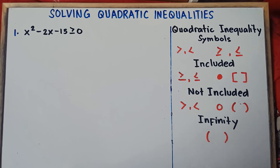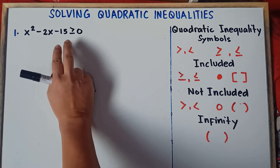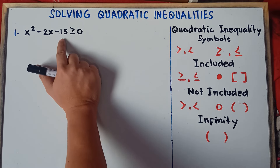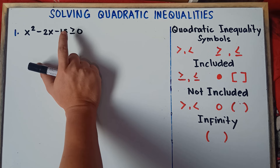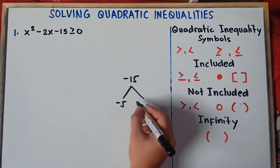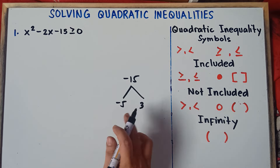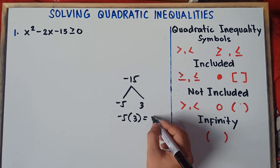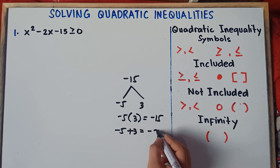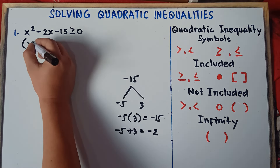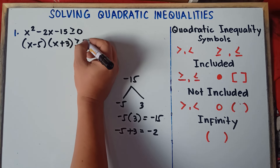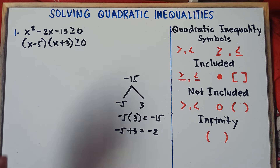Let's start answering. The first step is to factor this quadratic inequality. You find two numbers that when multiplied give negative 15, and when combined give negative 2. Those numbers are negative 5 and positive 3. If you multiply negative 5 by positive 3, you get negative 15. If you combine them, you get negative 2. So the factors are (x minus 5) and (x plus 3), and simply copy greater than or equal to zero.